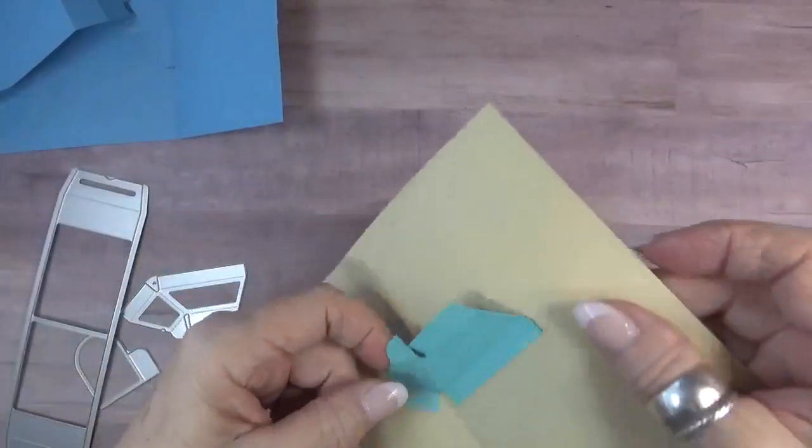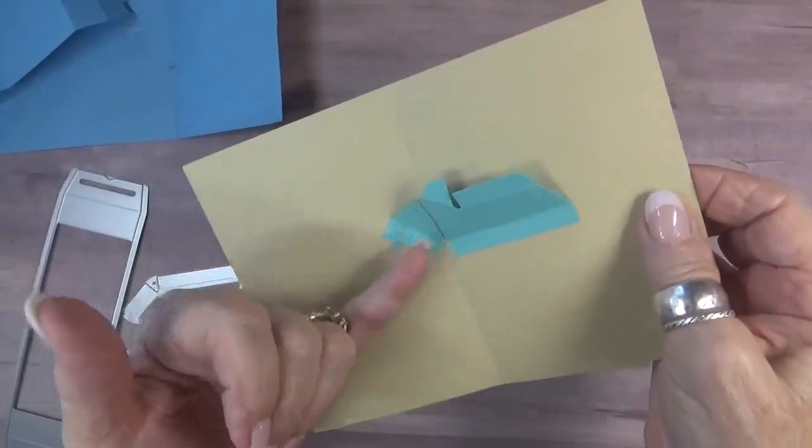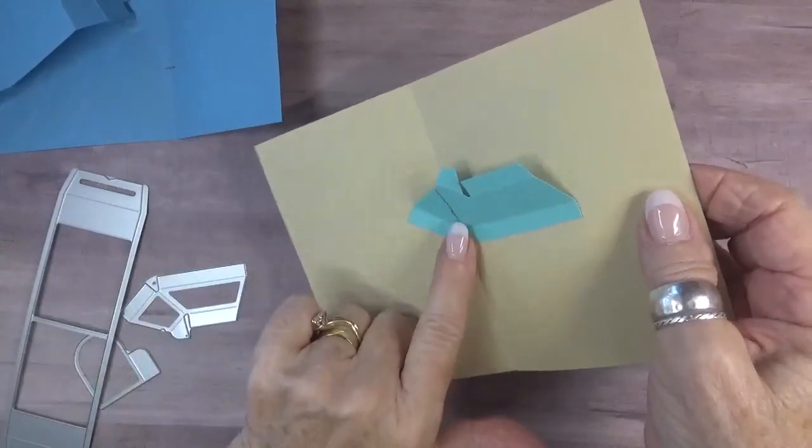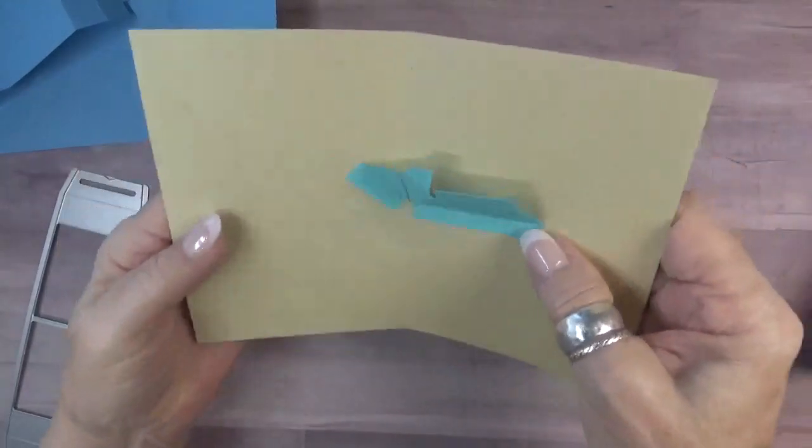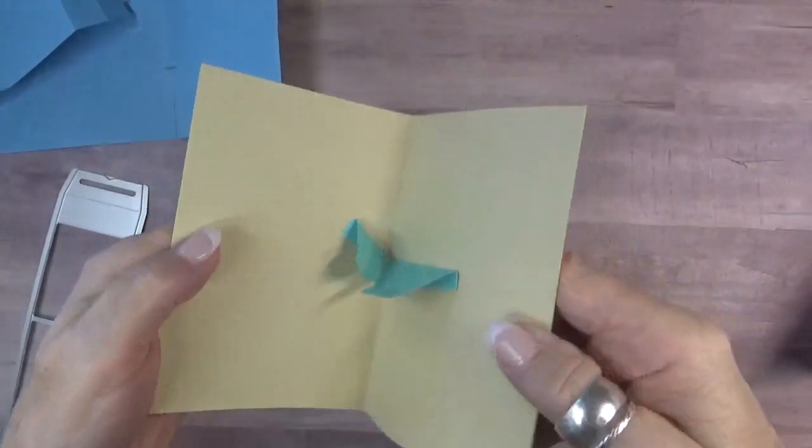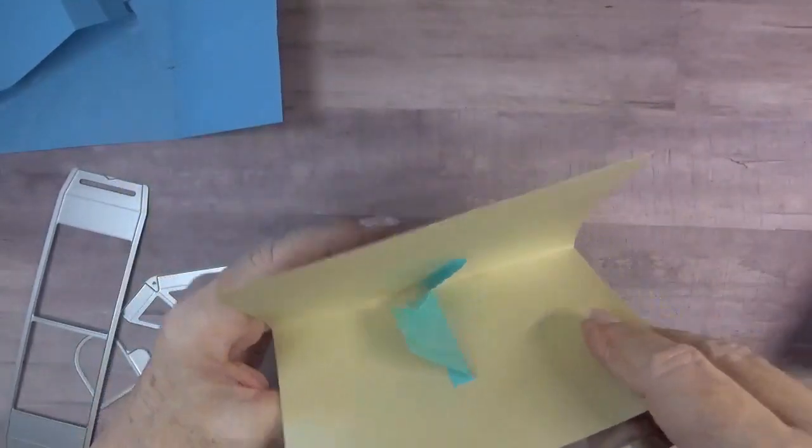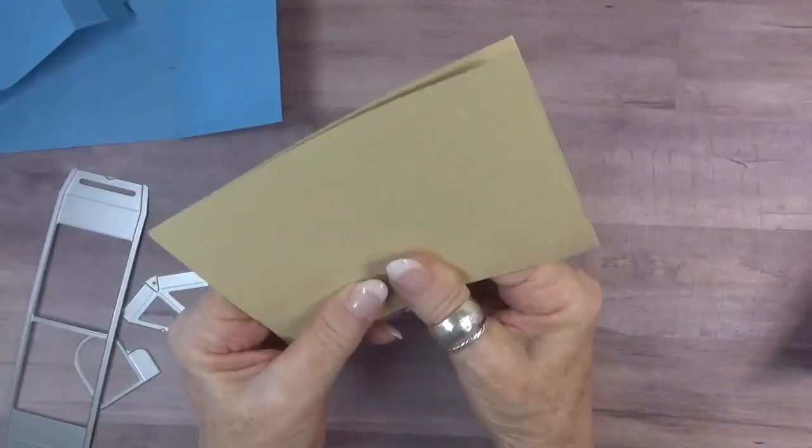I'm going to let that set up for just a second. Now you can see we didn't want to put a fold where this line was. We just wanted to line it up with the crease because the fold is over here. Now when you close the card, you can see that it folds down. And I'm going to give that a little pinch.